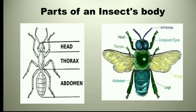Parts of an insect's body: most of the insects have six legs. The body of an insect is divided into three parts: head, thorax and abdomen.